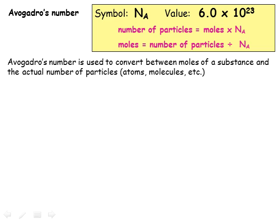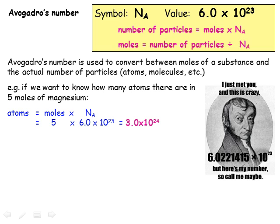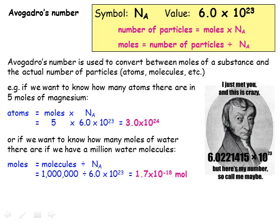Avogadro's number is used to convert between moles of a substance and the actual number of particles of that substance. For example, if we need to know how many atoms there are in 5 moles of magnesium, we multiply 5 moles by Avogadro's number, and we get 3×10²⁴ atoms. Similarly, if we know how many particles of a substance we have — for example, a million water molecules — we divide the number of particles by Avogadro's number, and we get 1.67×10⁻¹⁸, which we've rounded to 1.7×10⁻¹⁸.